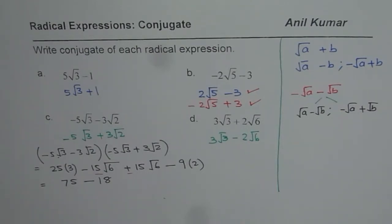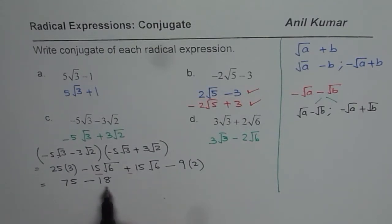So once you get your conjugate then multiplying the radical with its conjugate eliminates the radical part. And what you get is a rational number. So that is what the whole exercise is.